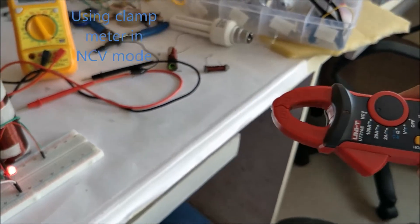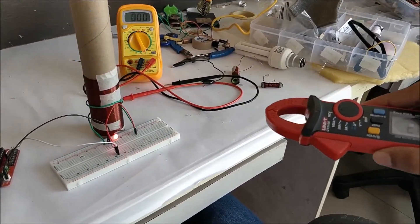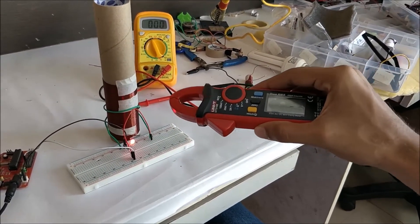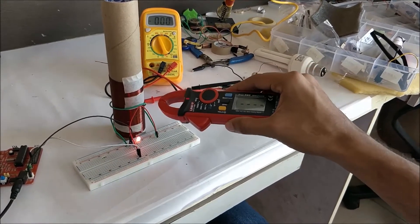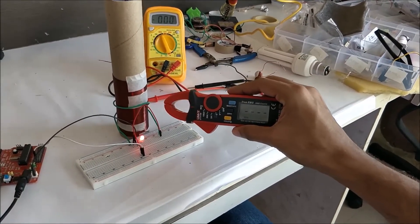When I bring the multimeter close to it, you can hear a beep and the beep gets stronger as I go close. So this is to show that there is a strong flux present in that area.